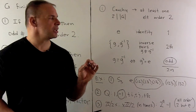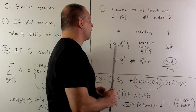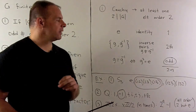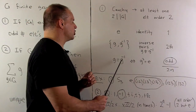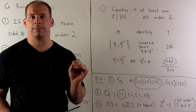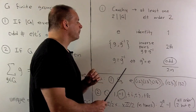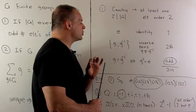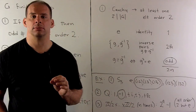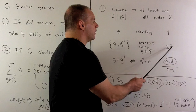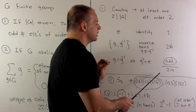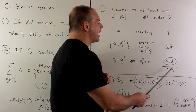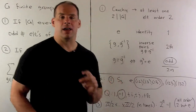That means we'll get another 2K elements, where K is the number of these pairs. Finally, we're left with the elements where G equals G inverse, but G is not the identity. If we multiply through by G, then we have G squared equals the identity, but G is not the identity, so these are just the elements of order 2. Now, if we count all of these elements, that's going to sum up to be some even number 2N. For that to happen, we'd have to have an odd number of elements of order 2, and that's our result.